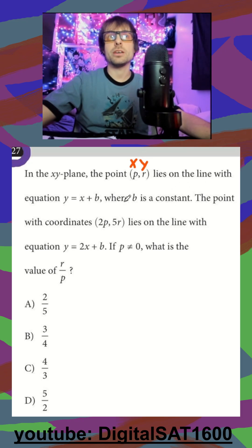And this point PR lies on the equation y equals x plus b. The point with coordinates 2P, 5r, that is also an x and a y, lies on the line y equals 2x plus b.